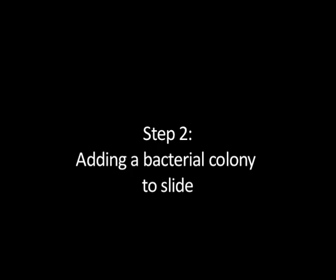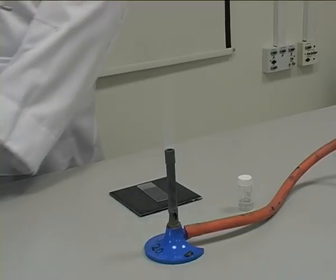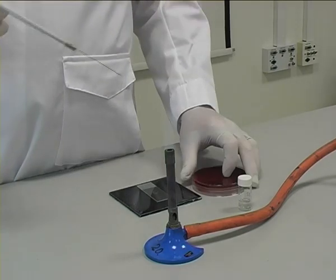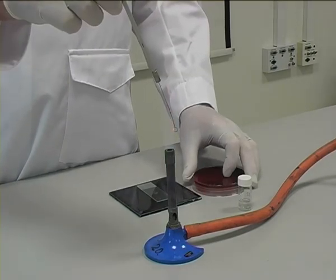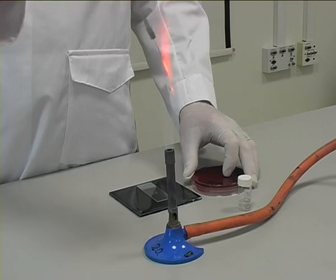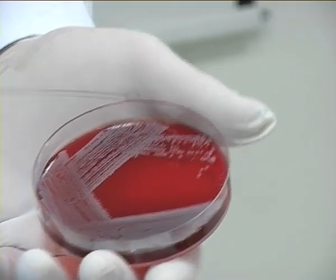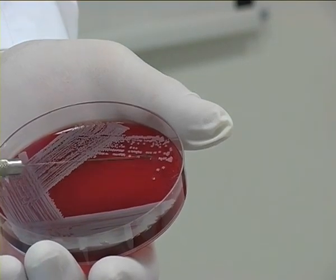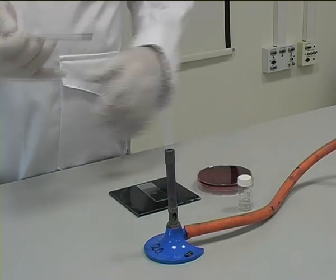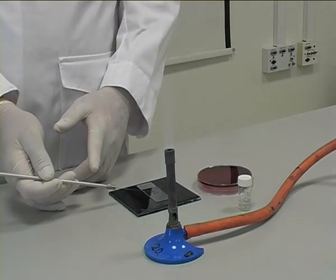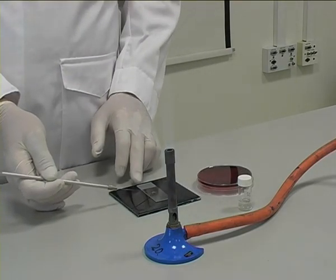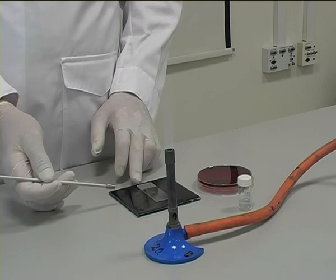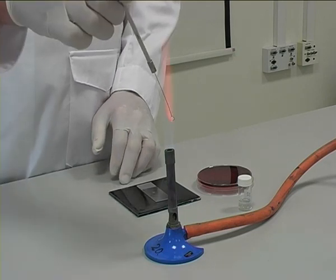Step 2: Adding a bacterial colony to the slide. A sterile inoculating loop is used to pick up a bacterial colony from an agar plate. This is added to the drop of hydrogen peroxide on the slide. The black tile under the slide helps to see whether the result is positive or negative.